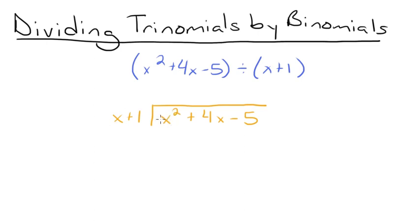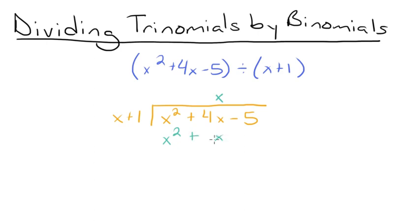x goes into x squared x times, because x times x equals x squared. So we're going to write an x right here above our x term in the trinomial. Then we're going to multiply the value we just wrote down, x, by the binomial x plus 1. So x times x is x squared, and x times 1 is just x. So we have x squared plus x, and we're going to write it right here underneath our trinomial.